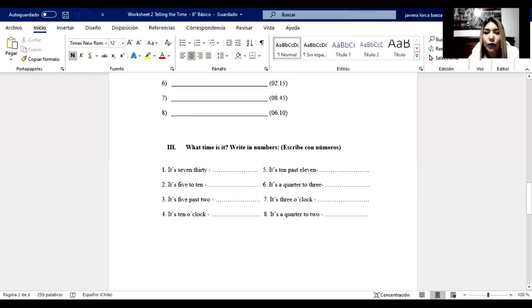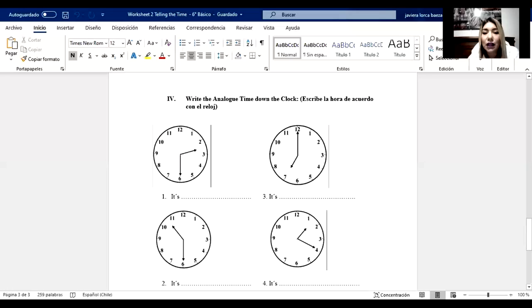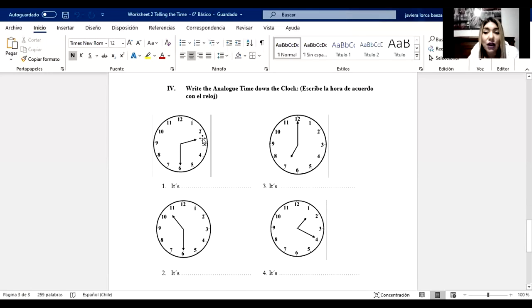Number four. Write the analog time down the clock. Now, the clock is ready. You have to look the clock and here, you have to write the time on the line. So you have four different clocks. Acá, si se dan cuenta, ustedes ya tienen dibujado el reloj. Tienen que mirar la hora y escribirla en la línea abajo. Y la instrucción dice que tienen que escribirla de la forma análoga.